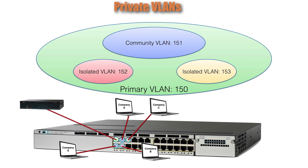We're configuring this switch for floor 15 of the building, with a Primary VLAN of 150. We want FastEthernet 1/0/1 to be a promiscuous port connecting to an uplink router, the next couple of ports to belong to Company A in Community VLAN 151, and then a couple of isolated VLANs. Let's go out to the live interface and check it out.